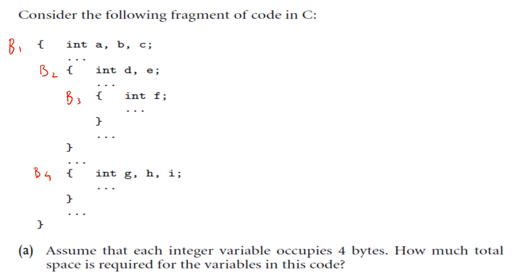In each of these blocks, some variables are declared. In block one we have declared a, b, c. In block two we have declared d, e. In block three we have declared f. And in block four we have declared g, h and i.